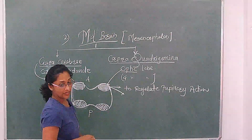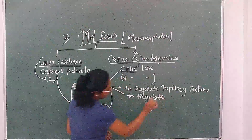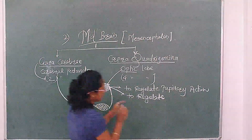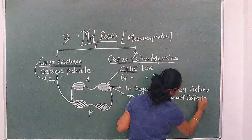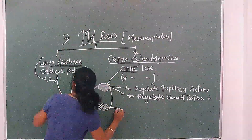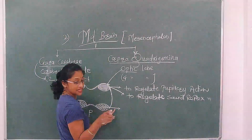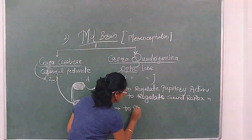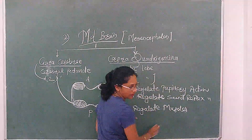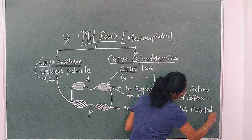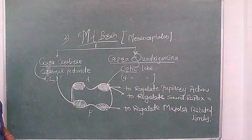The optic lobes also regulate sound reflex action. Crura cerebri, that is the cerebral peduncle, plays an important role to control muscles related to the limbs. It does not regulate all muscles — only muscles related to the four limbs as well as the hind limbs are regulated by this.